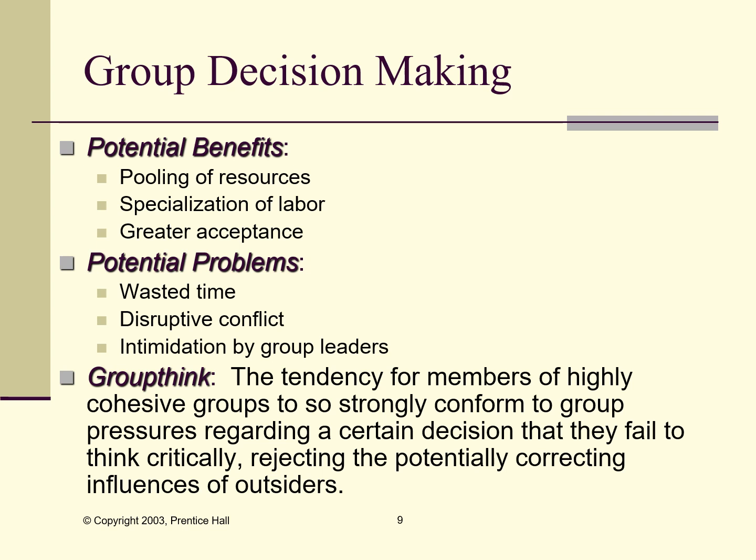When we find intimidation or domination, we often talk about this as groupthink — the tendency of members of a highly cohesive group to so strongly conform to group pressures regarding a certain decision that they fail to think critically, rejecting the potential corrective influence of outsiders or even minority members within the group. When looking at group decision-making, we want to maximize the benefits while minimizing the problems, and make sure we're not simply grabbing greater acceptance from a group decision by getting rid of the other positives — in other words, having a group that just agrees with everything.